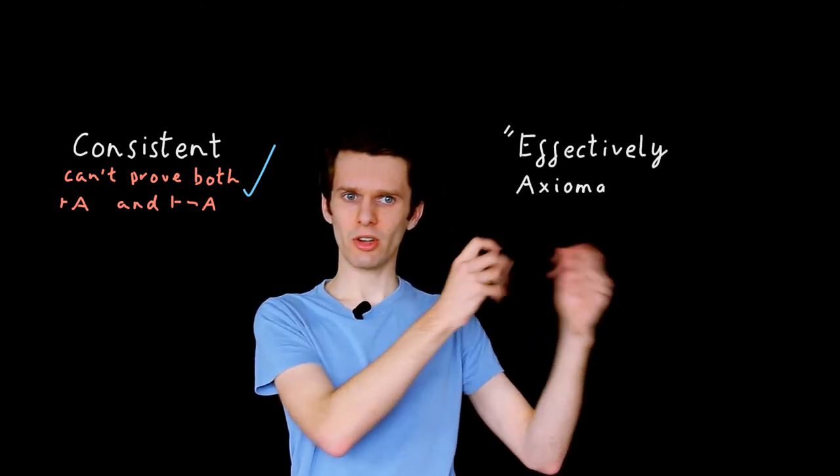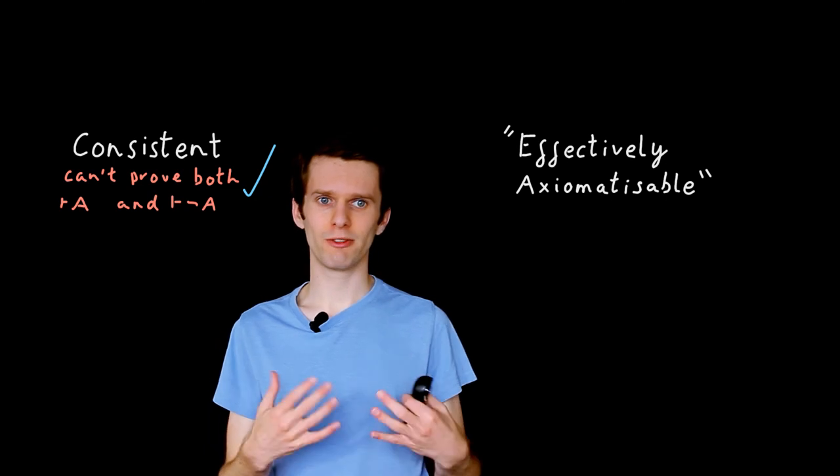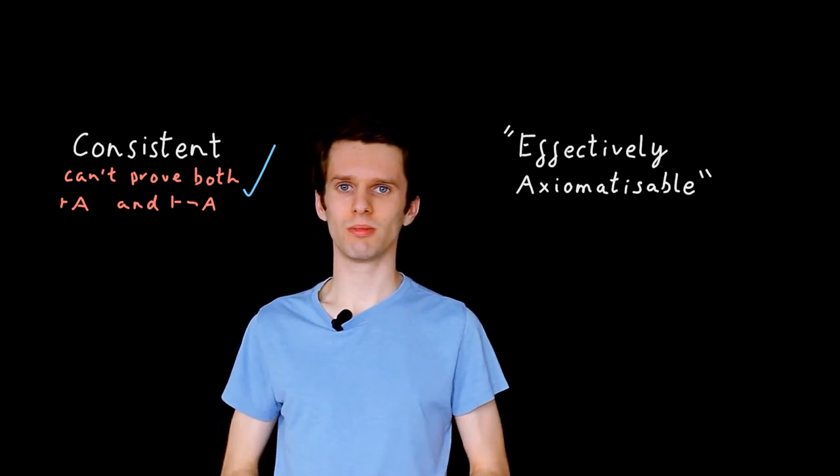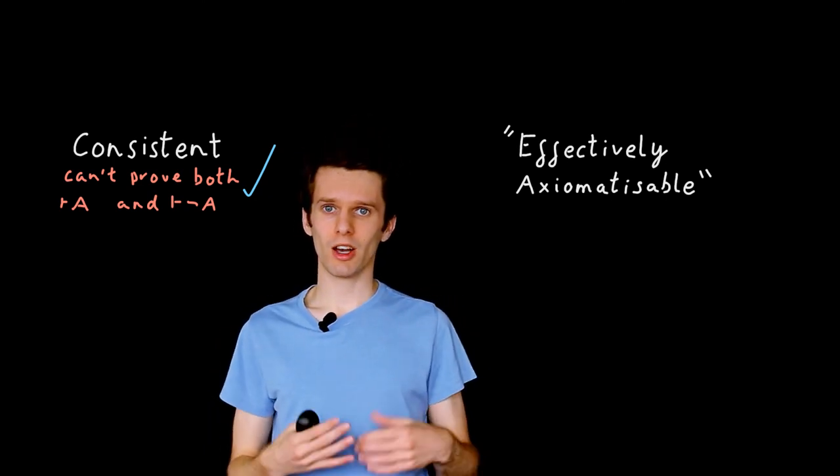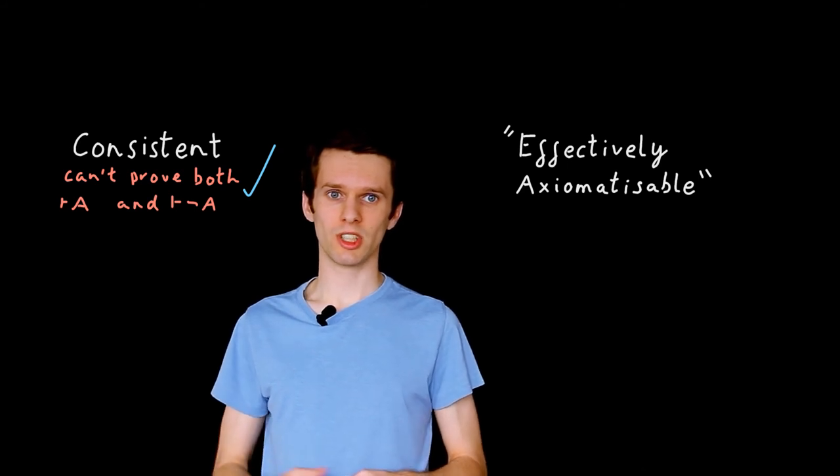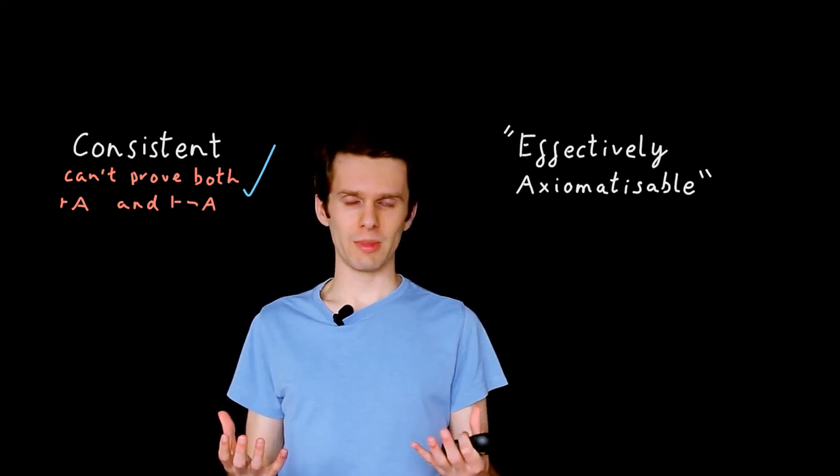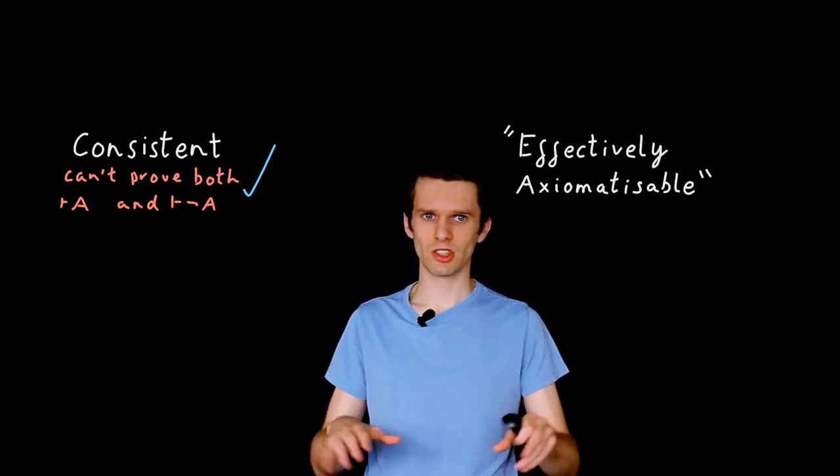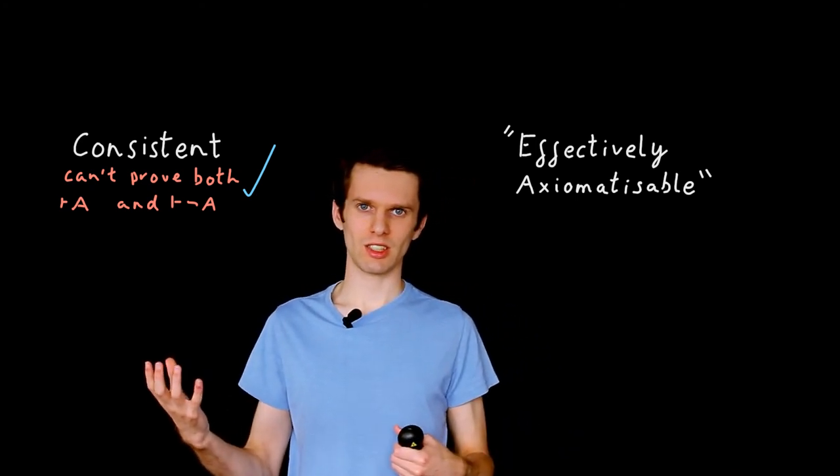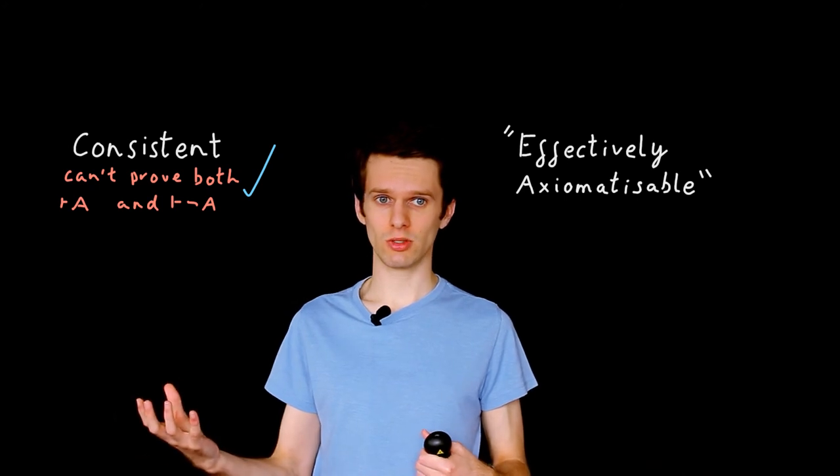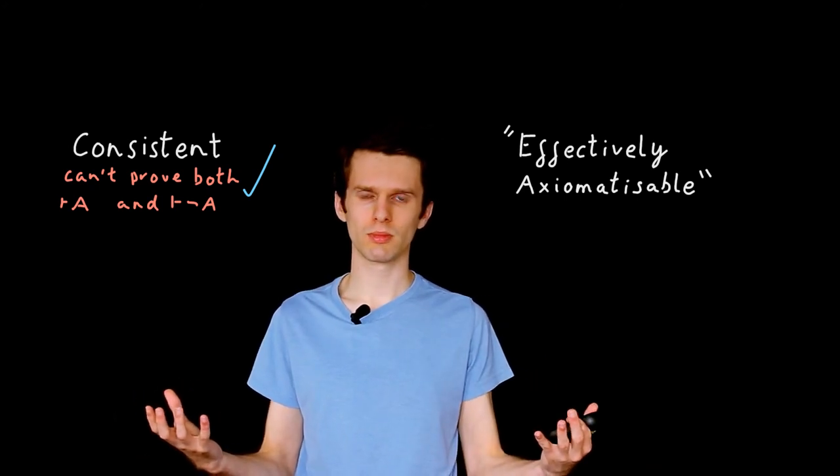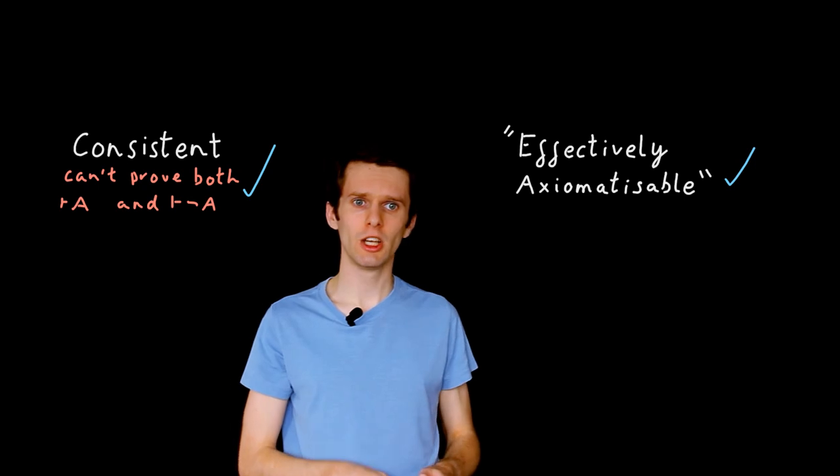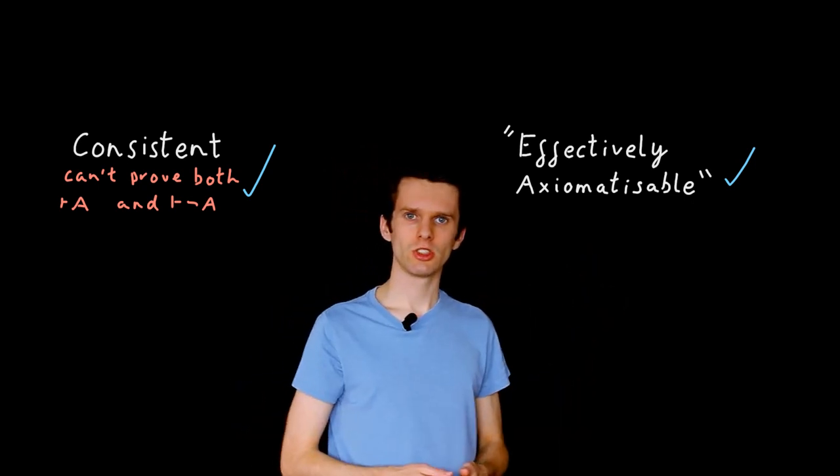Another slightly more esoteric property is known as effective axiomatization. And if our logic is effectively axiomatizable, basically all that means is that for any sentence we can write in our syntax, we can tell whether it is an axiom in our deductive system or it is not. And this is a useful property to have, so we want our logics to exhibit this.